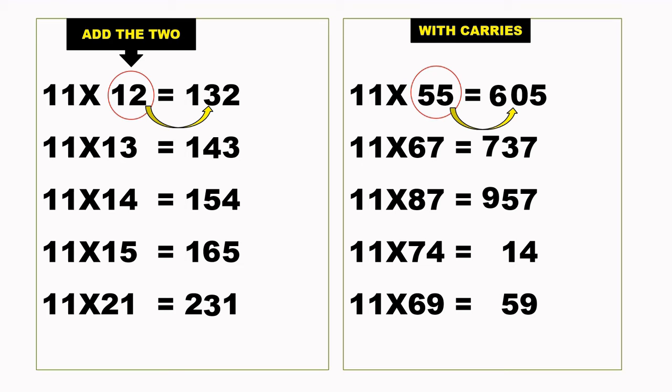11 times 74, our 4 is already down. 7 plus 4 is 11, put 1 down, carry 1. That 1 plus 7 is 8, our final answer is 814.